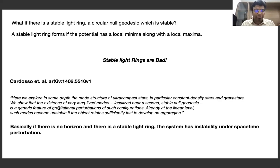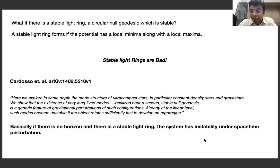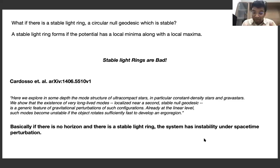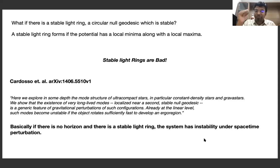Cardoso's work explores the mode structure of ultracompact stars — constant density stars and gravastars — showing that the existence of very long-lived modes localized near a second stable null geodesic is a generic feature of such configurations. The idea is that ultra-compact objects without a horizon develop a second light ring which is stable, and that stability leads to instability of the spacetime.